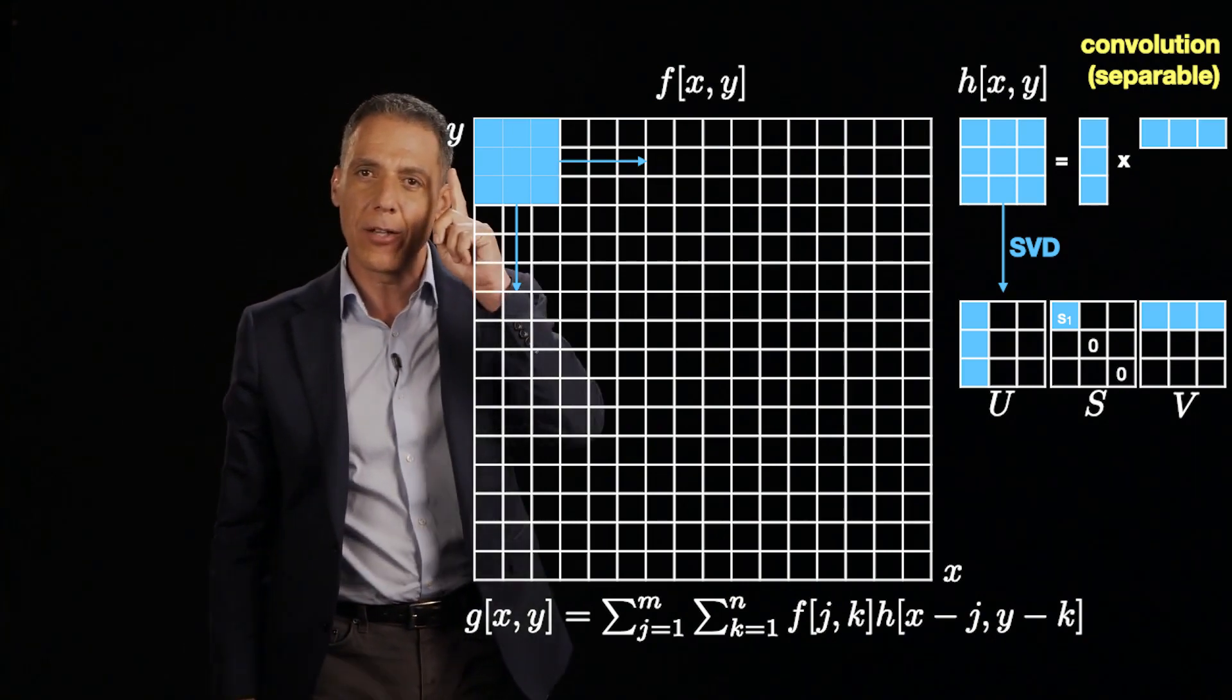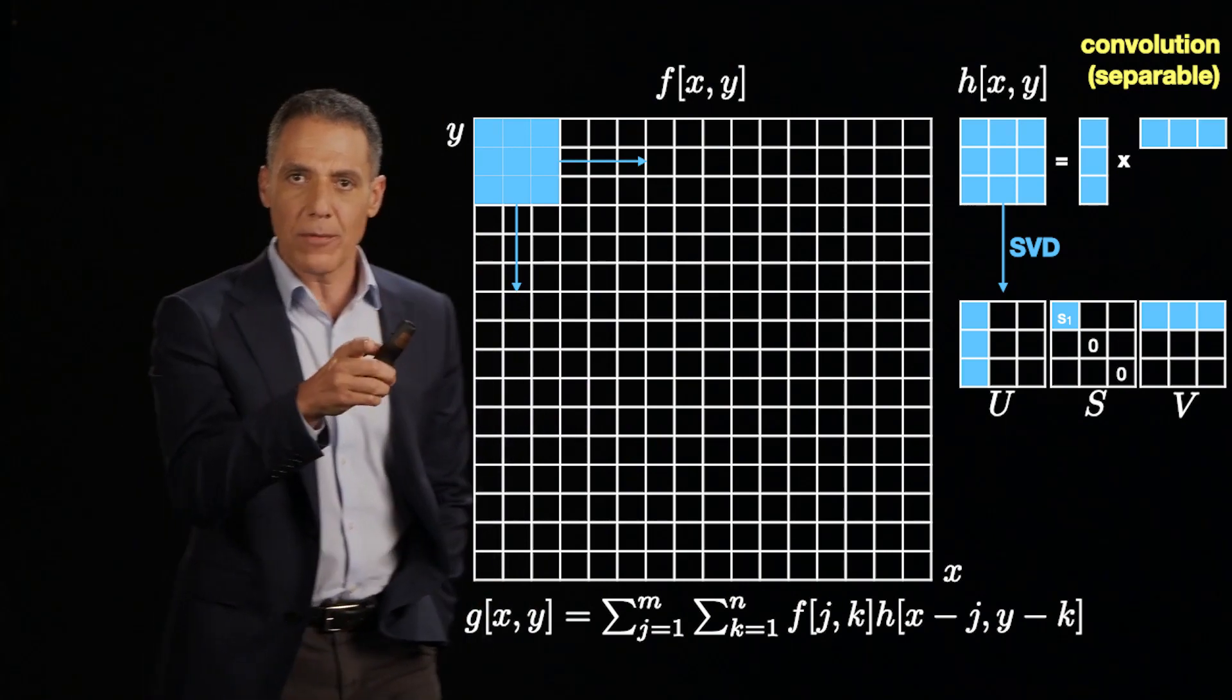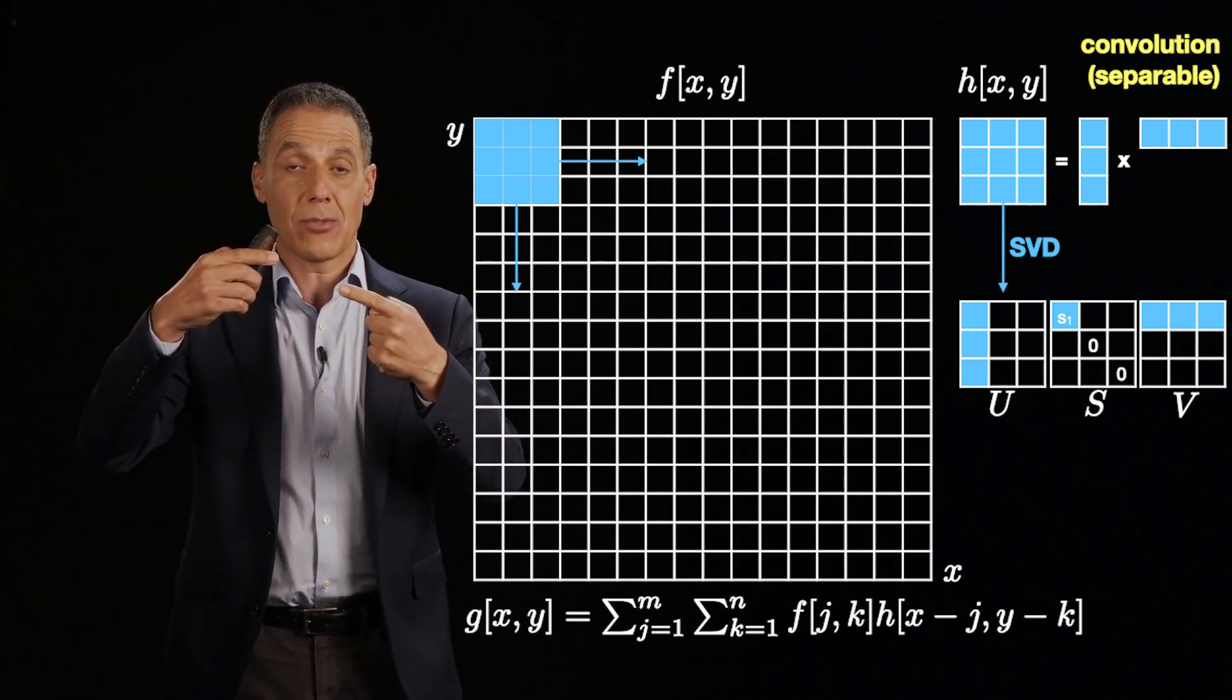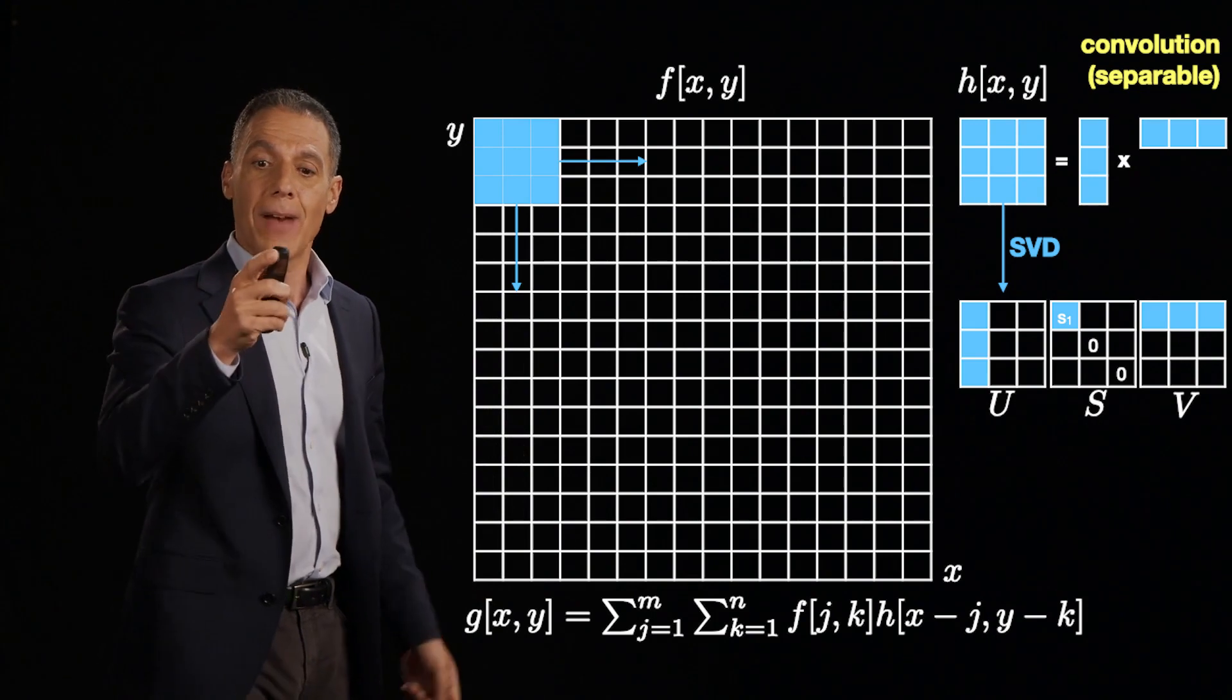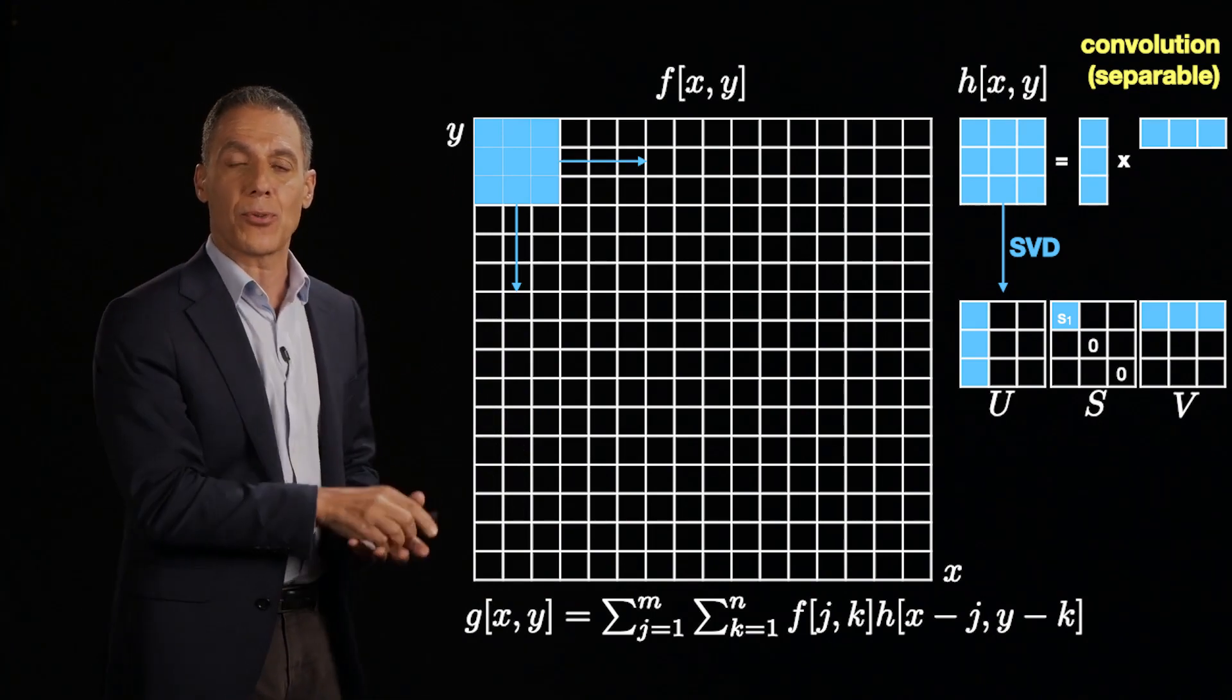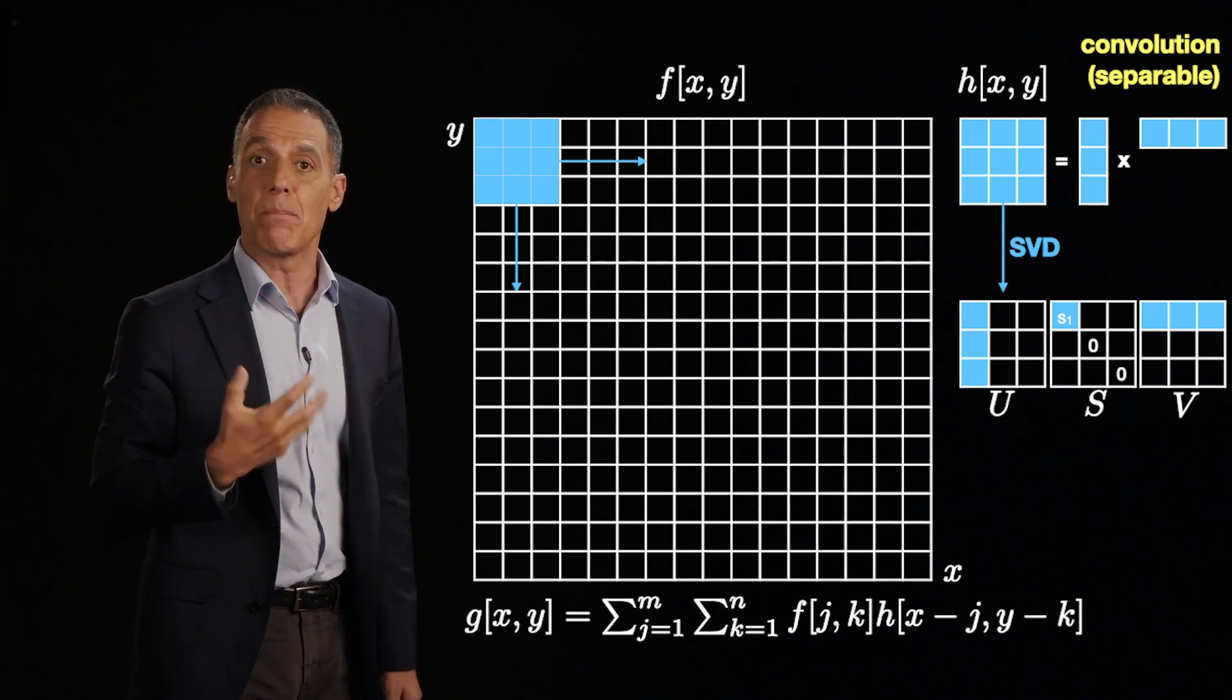Let's make sure we see that linear algebra, by the way. What is the product of a 3 by 1 vector and a 1 by 3 vector? A 3 by 3 matrix, right? We're taking an outer product, not an inner product. And so if I can write my kernel response, my filter as a product of these two 1D vectors, then I get a big savings.